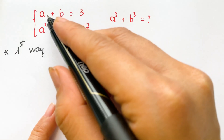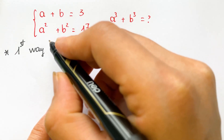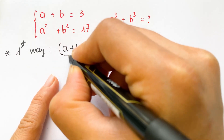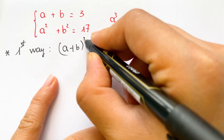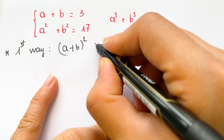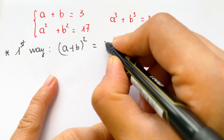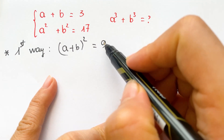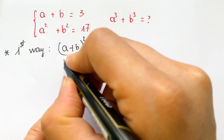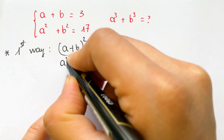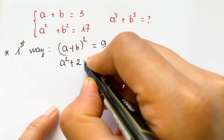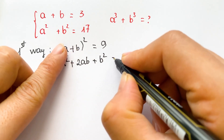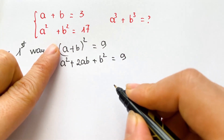You can see a plus b equals 3, so we also have a plus b whole power cube. So the square is equal to 9 — 3 squared is equal to 9. Therefore, we can have a squared plus 2ab plus b squared is equal to 9.